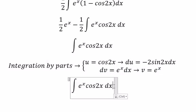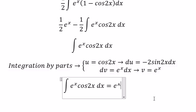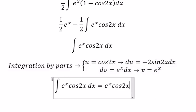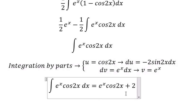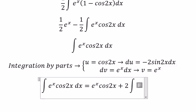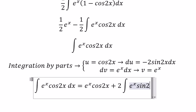We get u times v, which is e^x cos2x, and it becomes positive because we have the negative here, plus 2 times the integral of e^x sin2x dx.